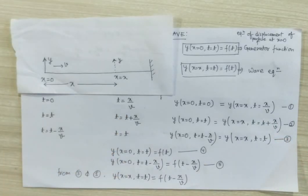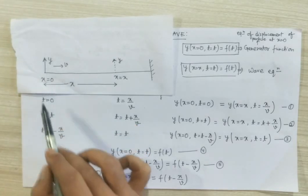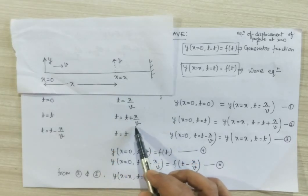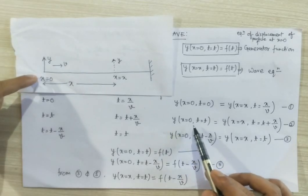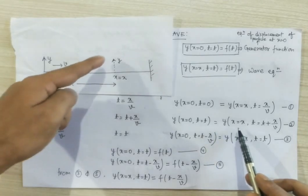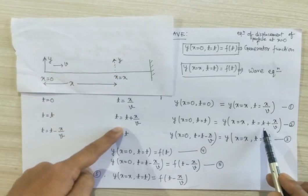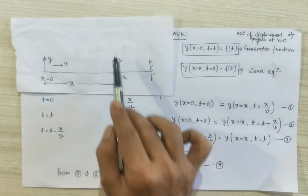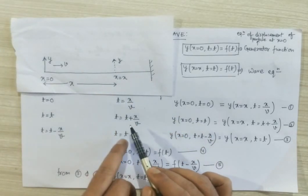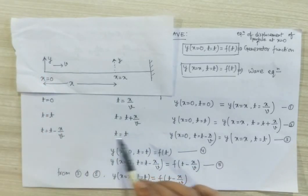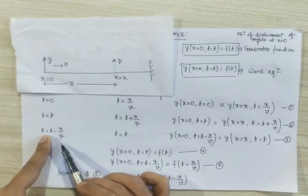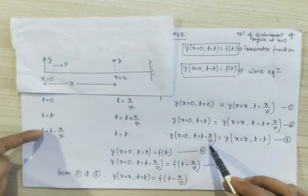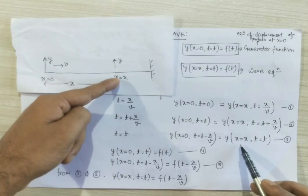Now suppose the displacement produced at the left end of the string at t equal to t. Then it will reach the point x equal to x after a time t plus x by v. In equation form: y at x equal to 0 and t equal to t will be equal to y at x equal to x at time t equal to t plus x by v. Or equivalently, if the displacement at x equal to x is produced at time t, then at the free end it was present at time t minus x by v. So y at x equal to 0 and t equal to t minus x by v equals y at x equal to x and t equal to t.